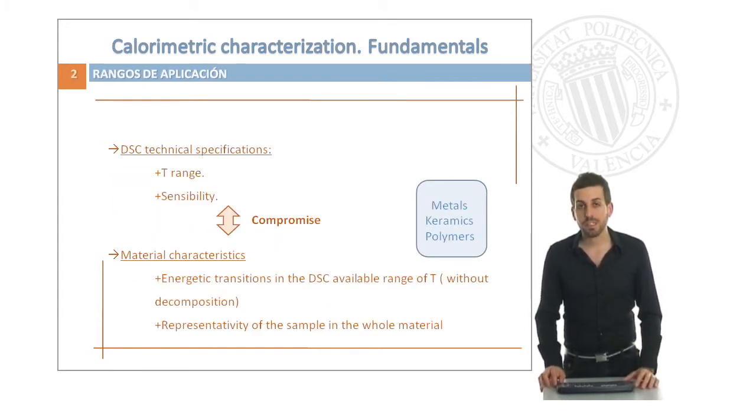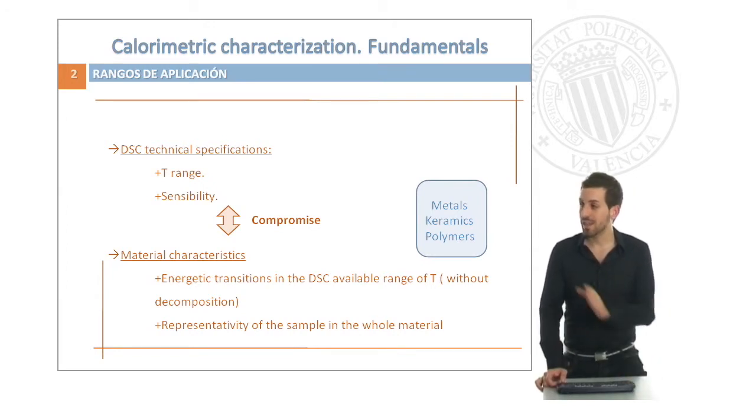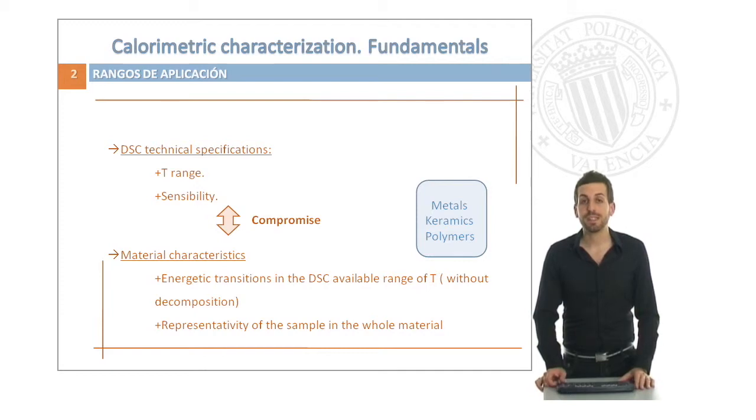When we are thinking about our experiments, we have to take into account two different features. First, we have to know the DSC technical specifications: the temperature range available for our DSC and the sensitivity of our measurement. On the other hand, we have to know if the energetic transitions of our material are available in our DSC temperature range, and it's very important to know if the representativity of our sample related to the whole material is representative enough.